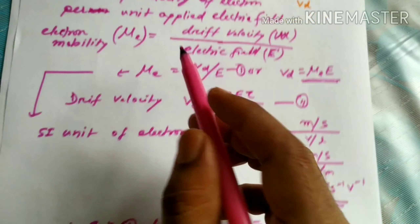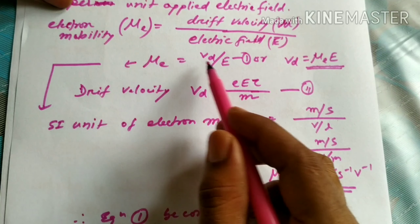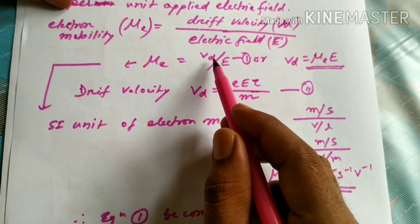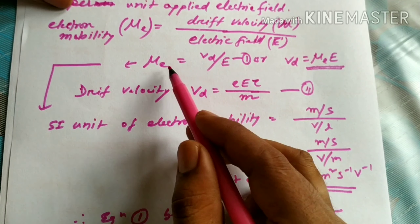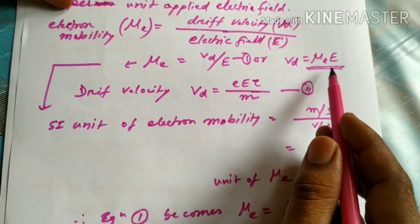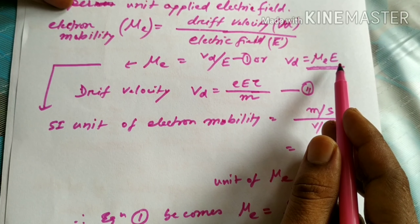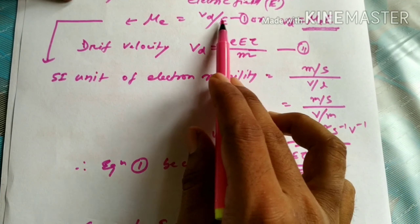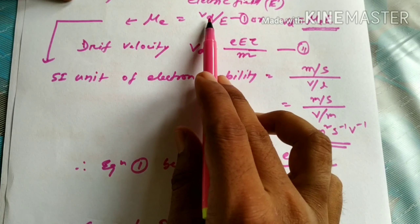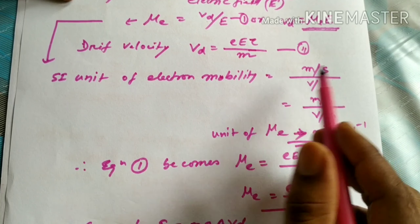So, electron mobility is denoted by mu of E. Drift velocity Vd divided by electric field E gives us the electron mobility.